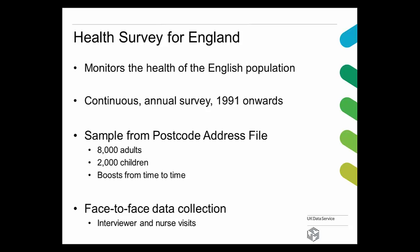It's commissioned by the Health and Social Care Information Centre and carried out jointly by the National Centre for Social Research and University College London. It's been conducted annually since 1991, so there's a good time series. The latest data from the UK Data Service is the 2014 data. The 2015 data usually comes around March in the following year, so the 2015 data will arrive in March 2017.